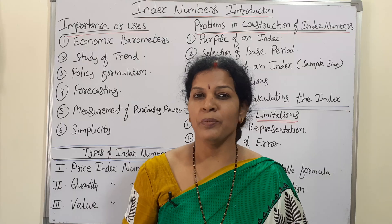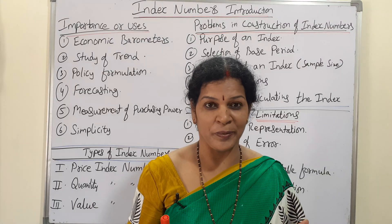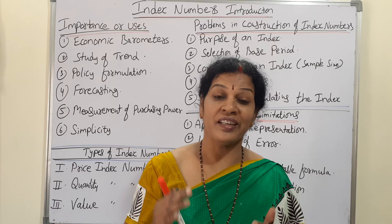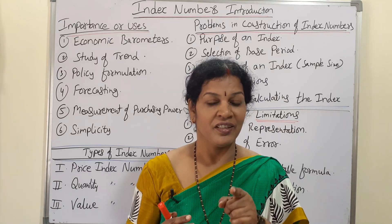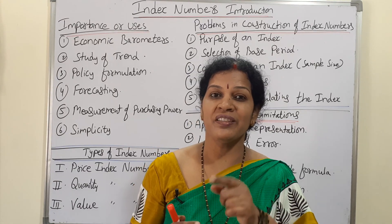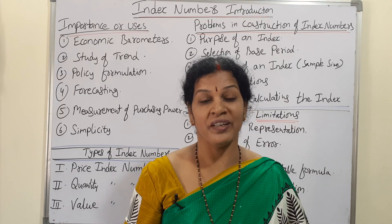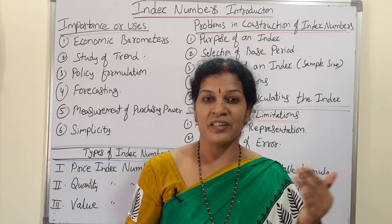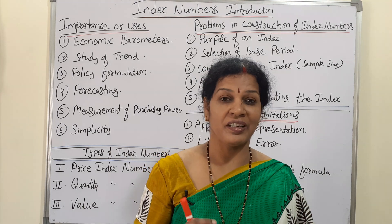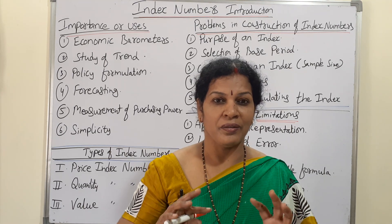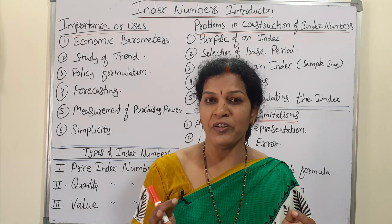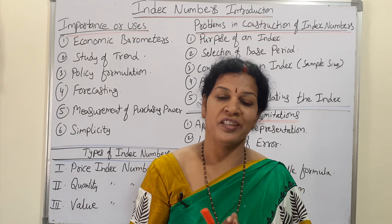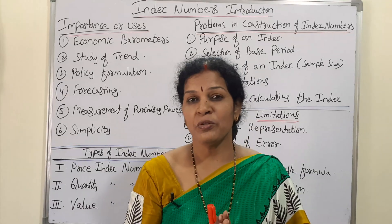The best example is the Bombay Stock Exchange. The prices on the BSE are always increasing or decreasing, and that indication is shown through index numbers. Like changes in the economy — prices increasing or decreasing, production increasing or decreasing, and policies of manufacturing — in many areas we can use index numbers.